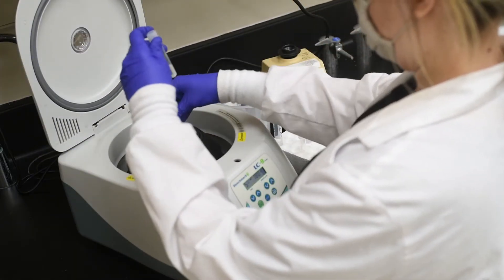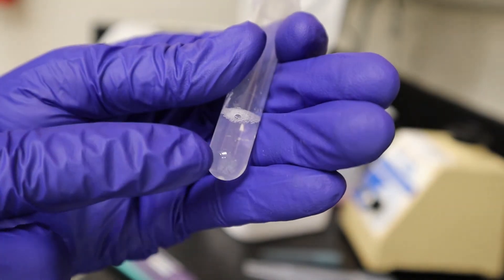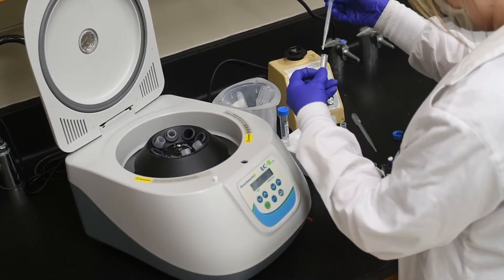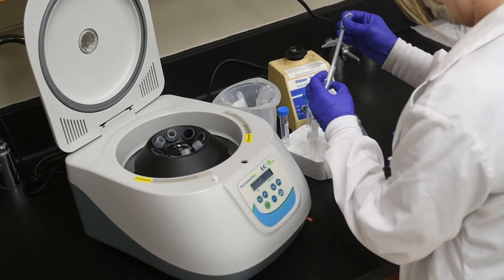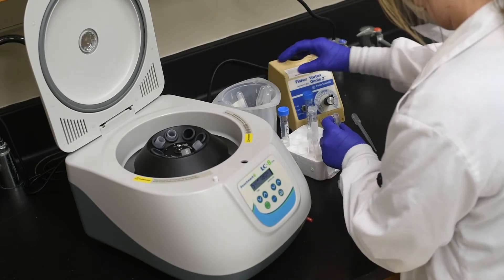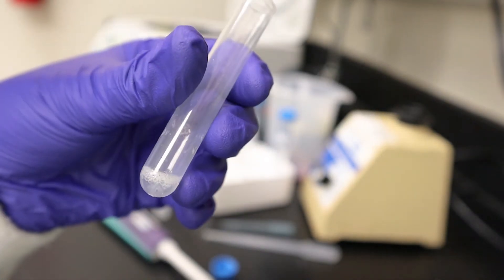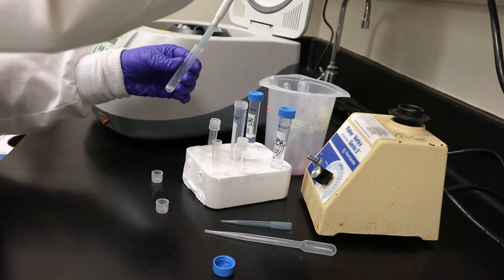Once centrifugation was complete, all but 50 microliters of the PBS were removed without disturbing the pellet. With the remaining PBS, the cells were resuspended and added dropwise into a fresh tube containing 1 milliliter of ice-cold 70% ethanol.